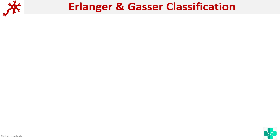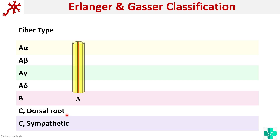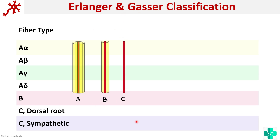The Erlanger and Gasser classification is based on fiber diameter as well as conduction velocity. They classified fibers into A, B, and C. Class A was further divided into A-alpha, A-beta, A-gamma, and A-delta. Diagrammatically, the A fiber has the largest diameter, followed by class B, and finally C, which is unmyelinated.